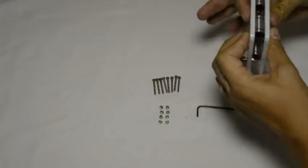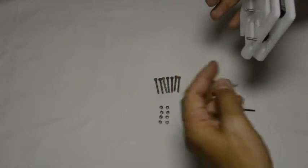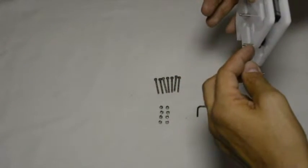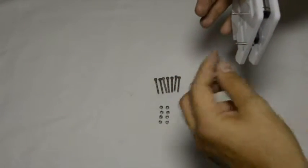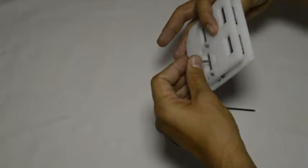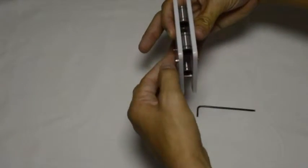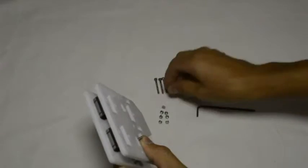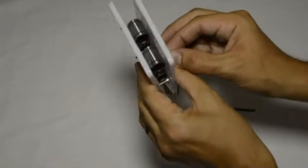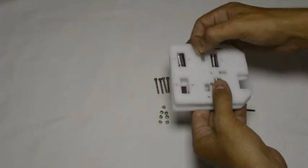Then we will mount the screws from the side where the M3 by 16 screws are sticking out. We will put the M3 by 25 screws through and fix them on this side. You can see it might be a little bit of a tricky process.